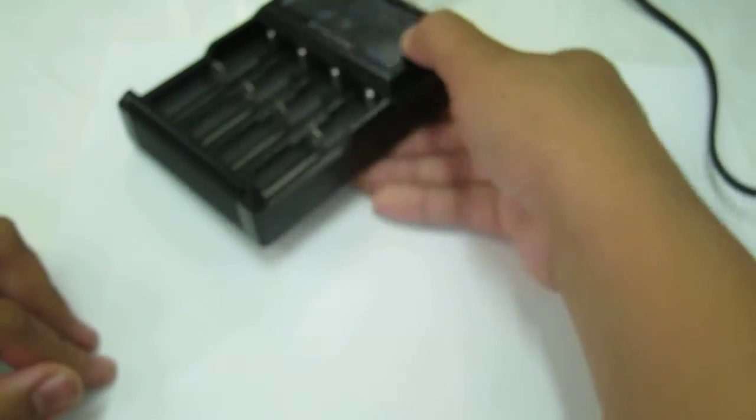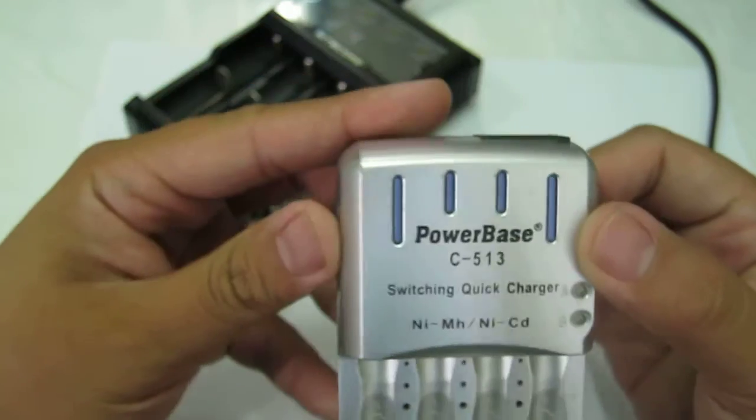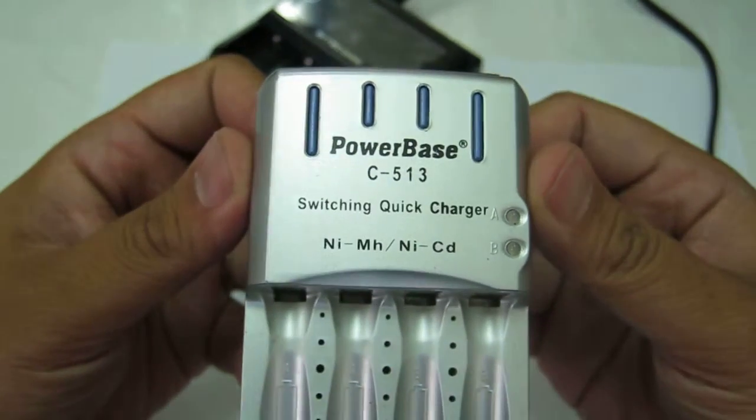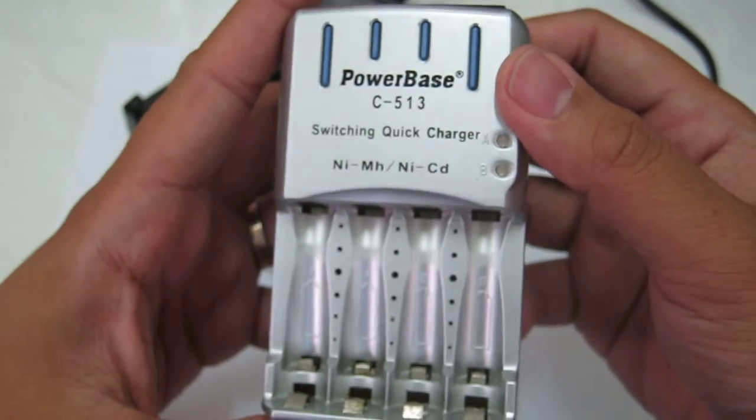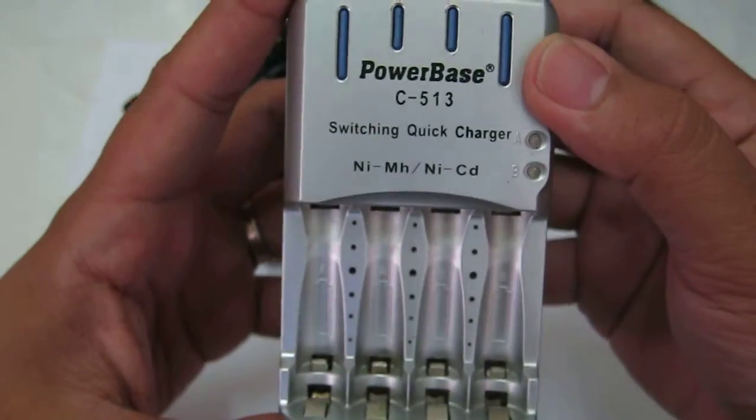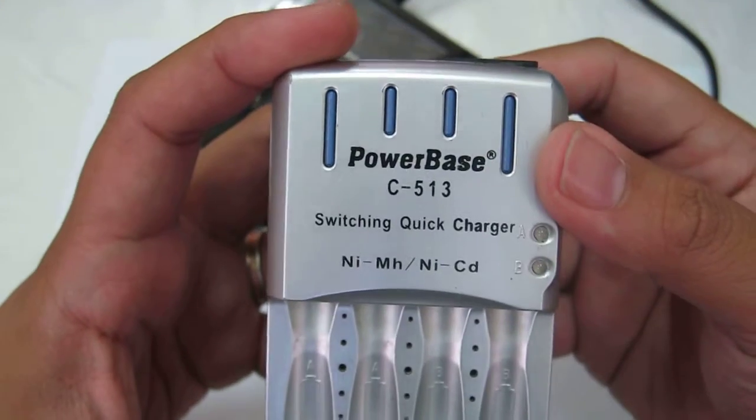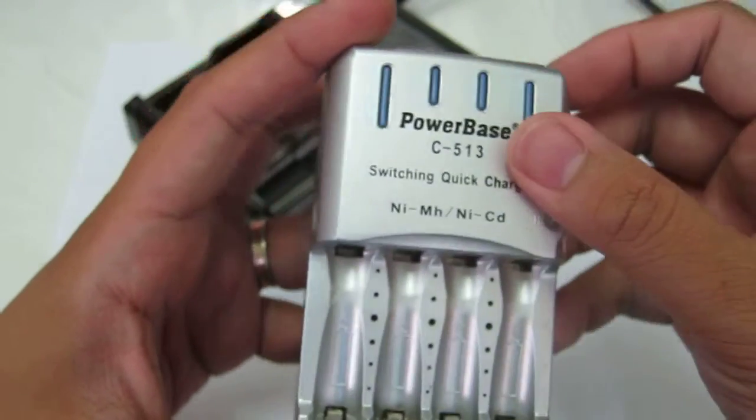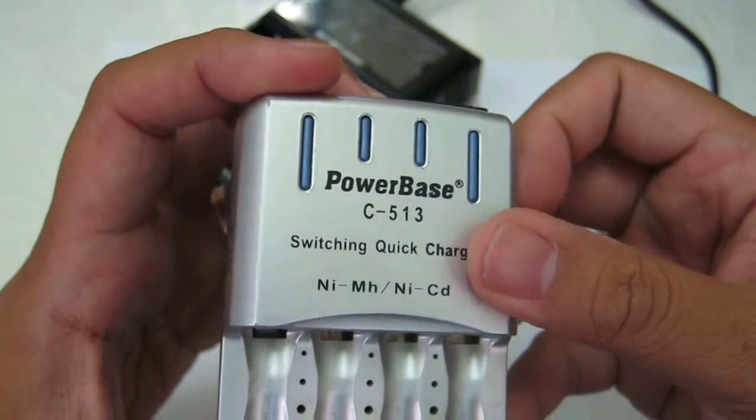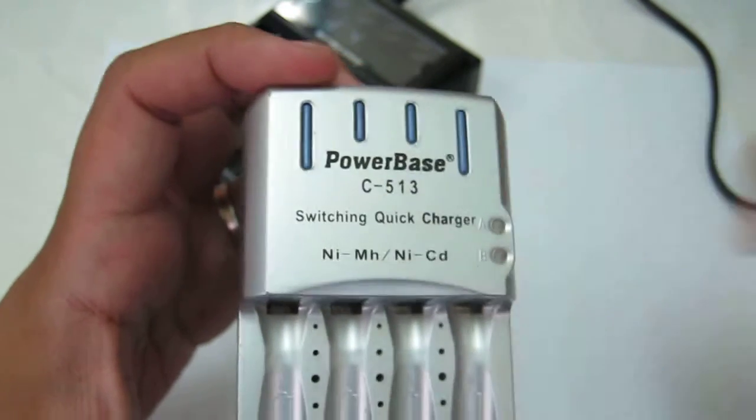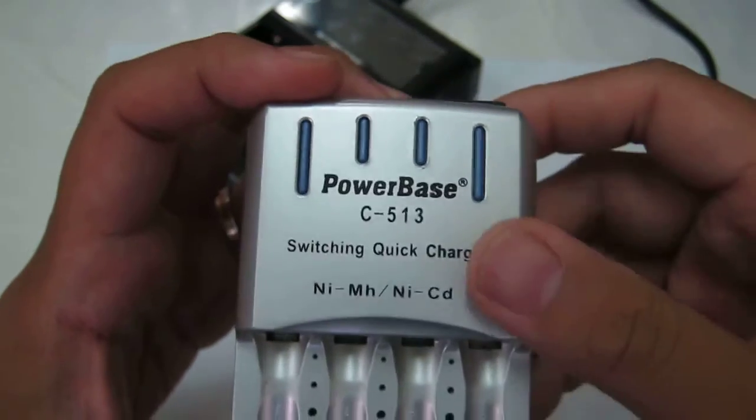My old charger is a PowerBase C-513 charger, which is primarily used to charge AAA and AA batteries. I chose this because after reading stuff online, I saw that for better charging or for longer-lasting rechargeable batteries, you need a minus Delta V charger.